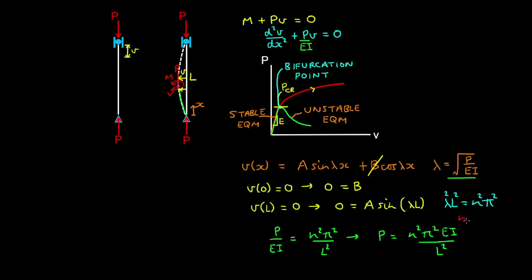Here n is an integral multiple of pi, so you can have different buckled mode shapes. This one here is when n equals 1, and when n equals 2, you're going to have something like this, and so on.